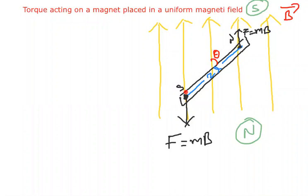Magnetic lines of force are directed from north to south. So the south pole attracts towards north, and since north is downward here, south pole is attracted downward — opposite to the field. The north pole attracts towards south, experiencing force in the direction of the magnetic field. Arrow marks show the field is directed from down to top, confirming south pole experiences force opposite to field and north pole in the same direction.